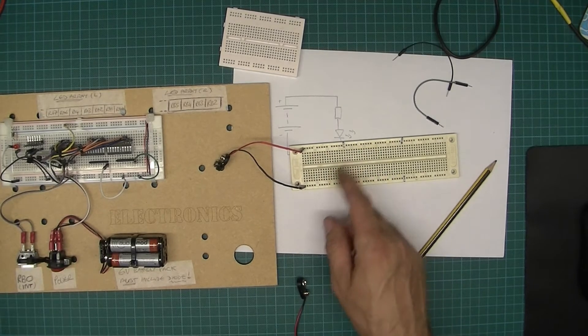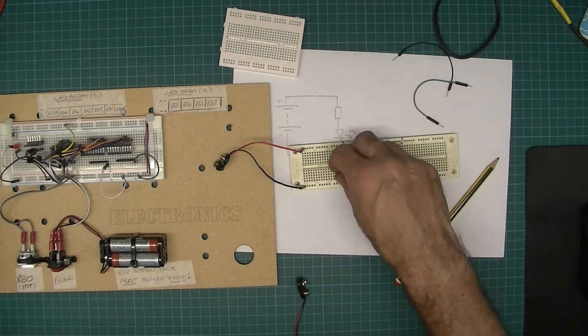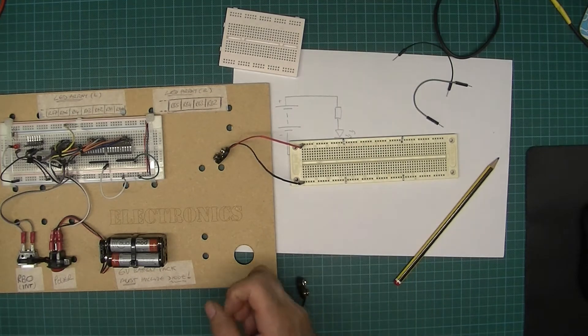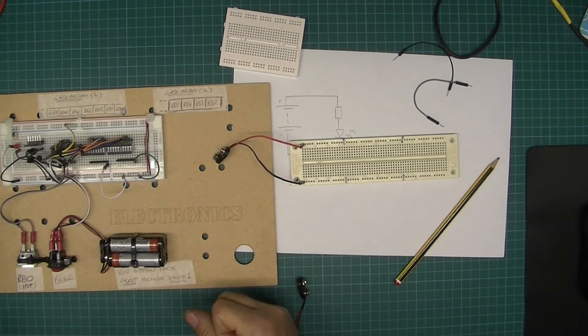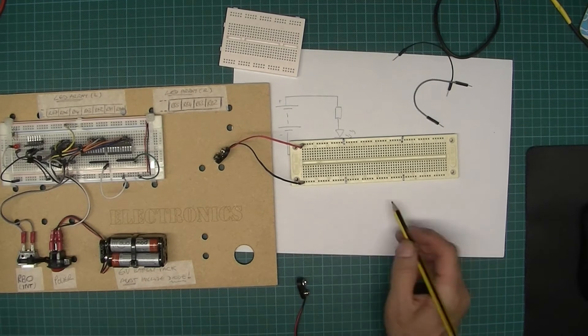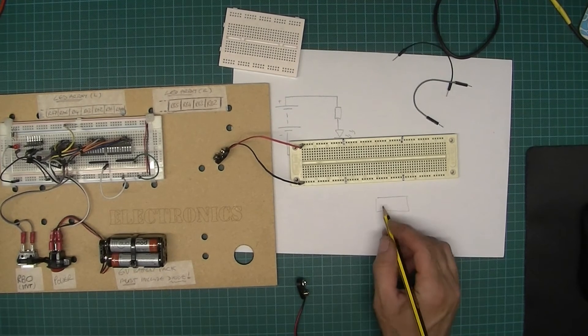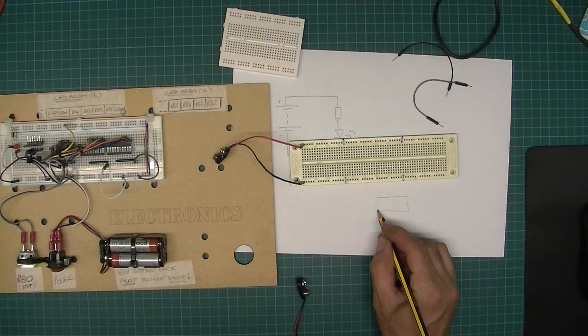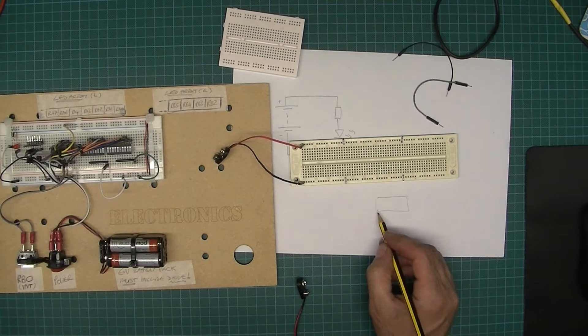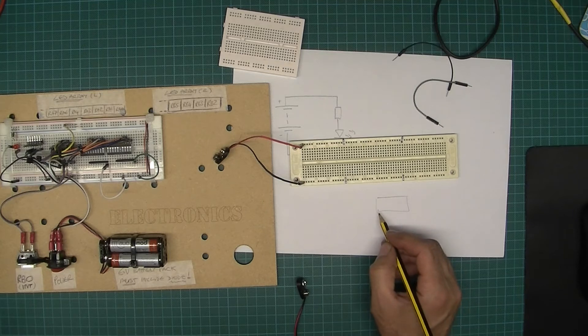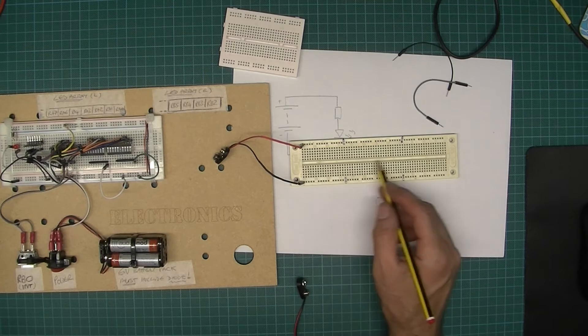If you're using a breadboard like this, that's not a problem. You could turn the integrated circuit around. I don't like to do that—if I've got an integrated circuit, I like to keep pin one down there. That's my preference. There's no rule to say you have to have pin one bottom left, but that's what I always do on breadboards.